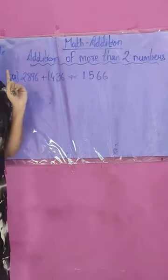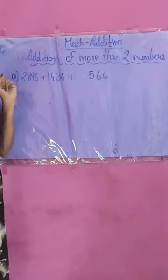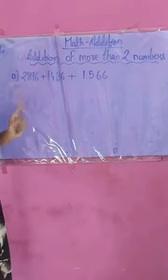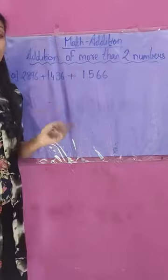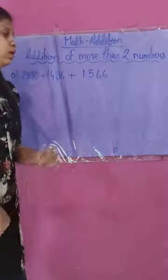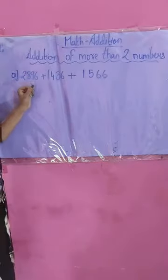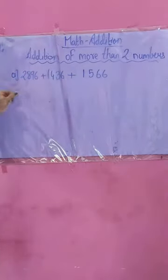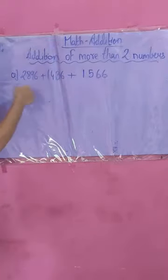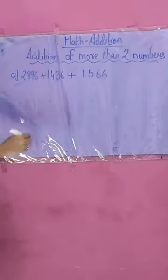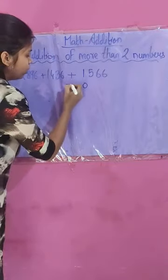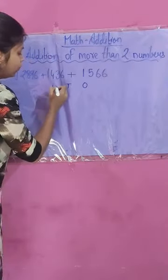You have to remember the concept of with regrouping and without regrouping here as well. With regrouping means carry over sums, and without regrouping means no carry over sums. Now we are going to add these numbers by arranging them — they are currently in horizontal form, so we will arrange them in vertical form.